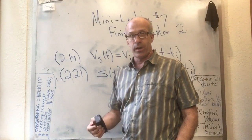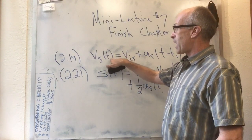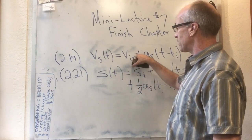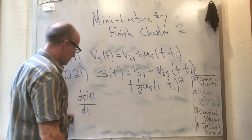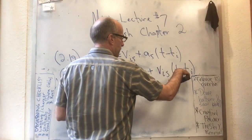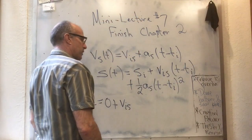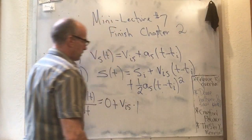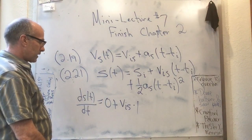Let's double-check things the calculus way. If this position function is supposed to give you this velocity function, we ought to be able to take the derivative of position to get velocity, because the slope of s(t) should give us v(t). Let's take the derivative: ds(t)/dt. The derivative of the constant s_i is zero. This next term has a constant v_is multiplying (t minus t_i), and the derivative of (t minus t_i) with respect to t is just one.